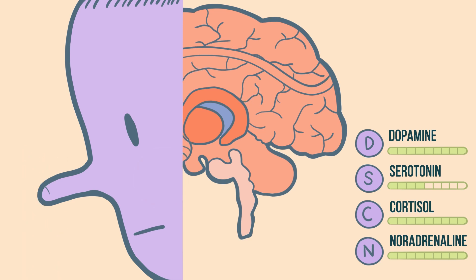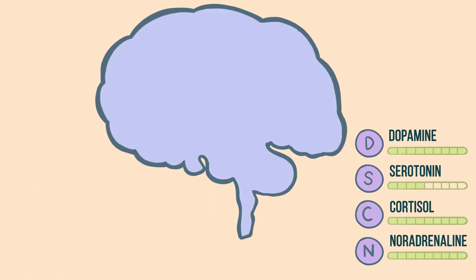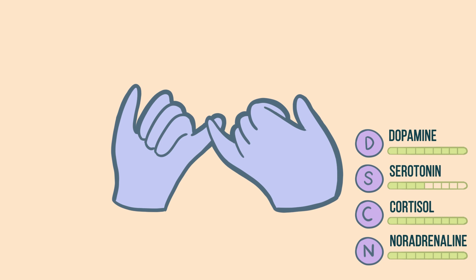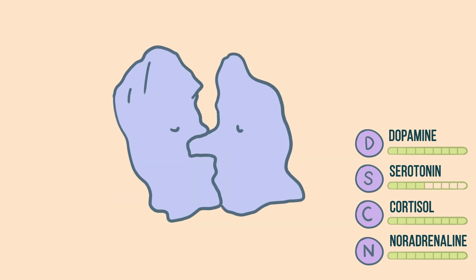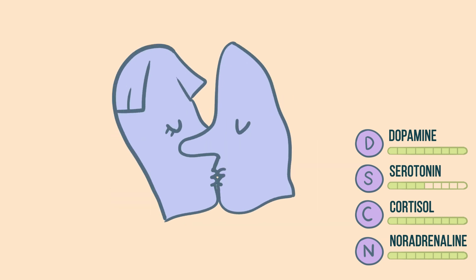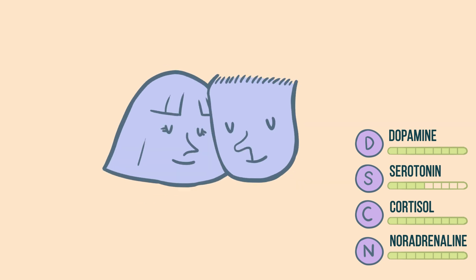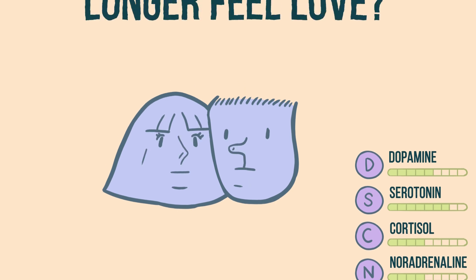Over time, after the initial giddiness of the falling in love stage passes, if a committed relationship is formed, partners move from a more passionate and maddening love to a compassionate one. Dopamine levels are reduced, and serotonin rises to normal levels again. There's also a depletion of noradrenaline and cortisol. We no longer feel the obsession that overcomes us initially.